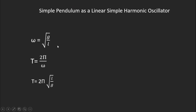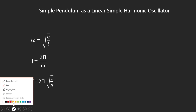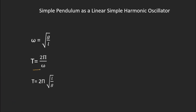From the comparison, ω² = g/L, so ω = √(g/L). The time period T = 2π/ω, therefore: T = 2π√(L/g). This is the time period of a simple pendulum executing simple harmonic motion.